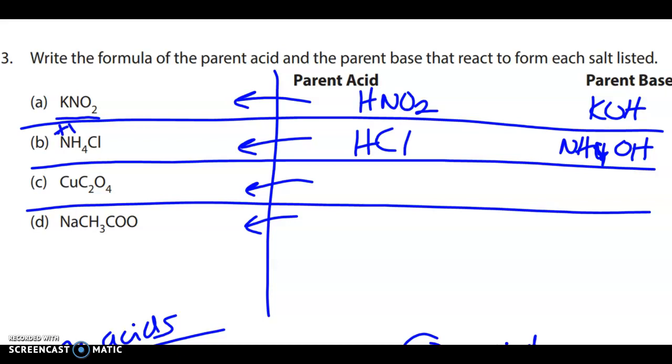So over here, we have Cu, which is copper. Of course, we know that is going to be a positive charge. And then C2O4, I believe that is oxalate. Let me just look that up. I believe that C2O4. Yes, that is oxalate. Okay, so it's another polyatomic ion, right? It has a negative 2 charge.